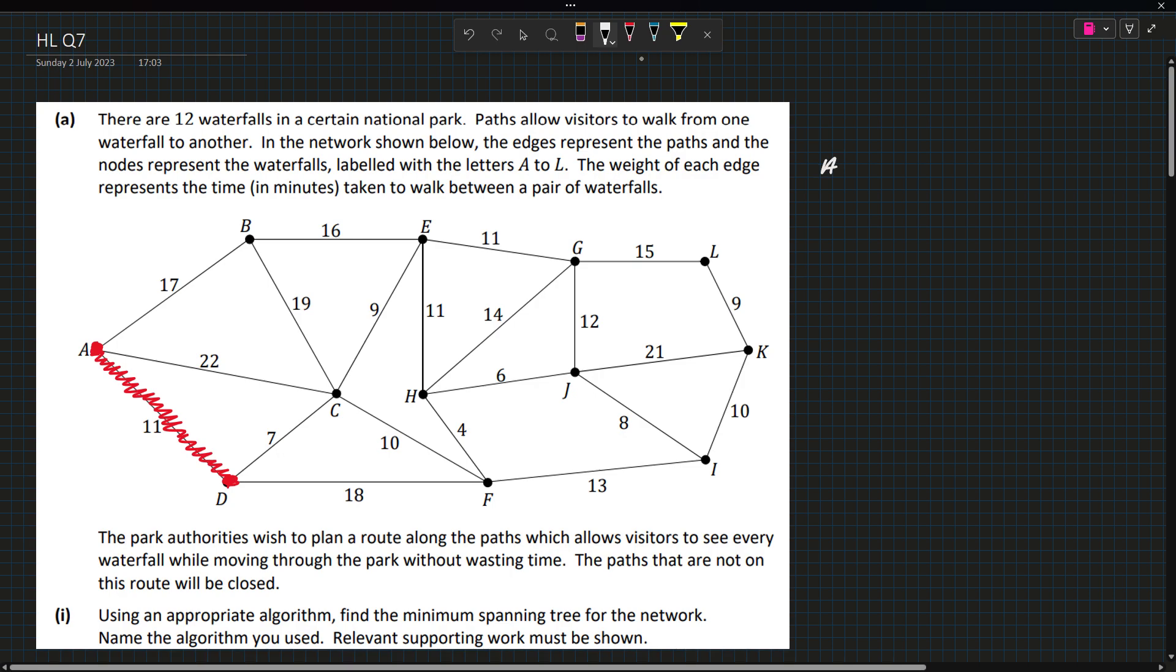Let's write that AD. Now coming out of A or D the smallest one is CD, it's seven. That also means we block off AC because that creates a cycle.